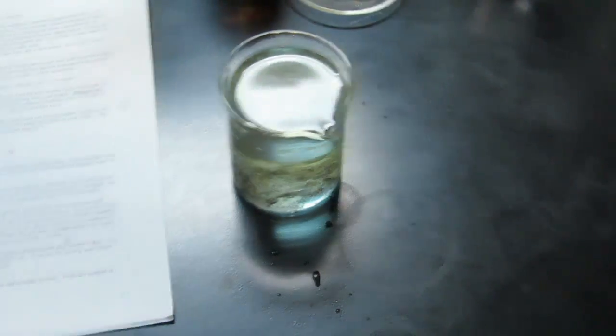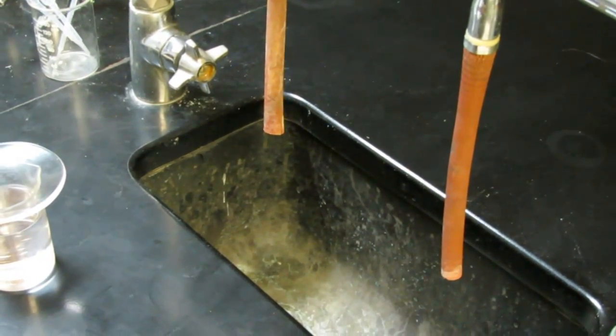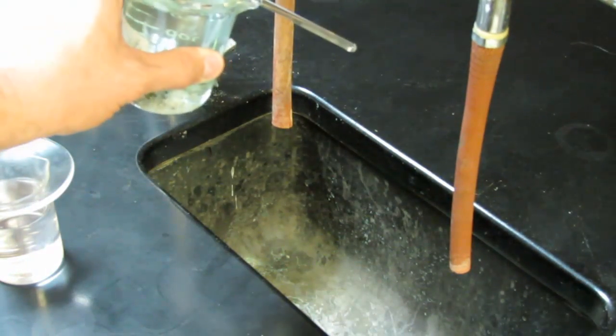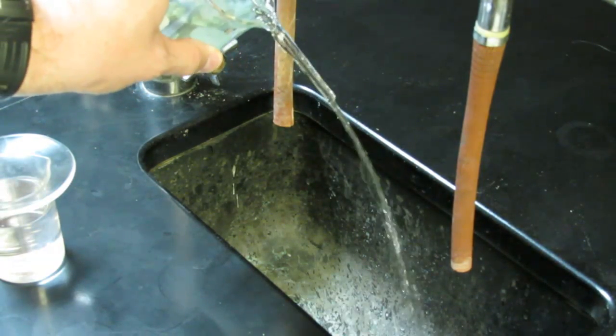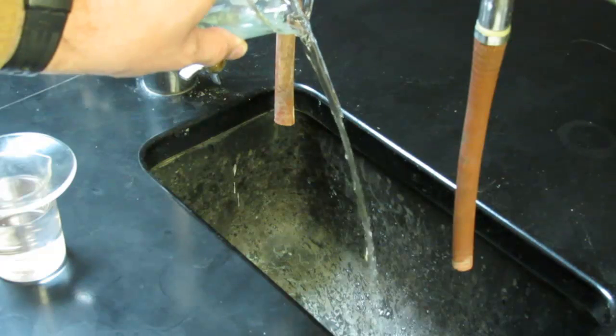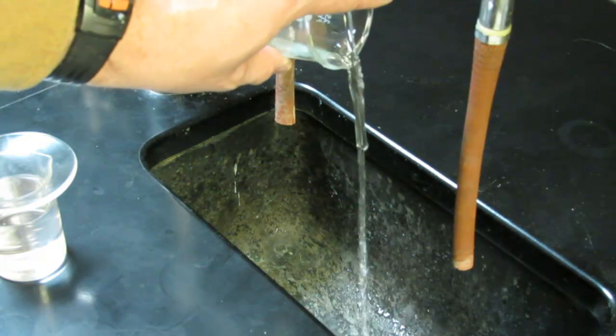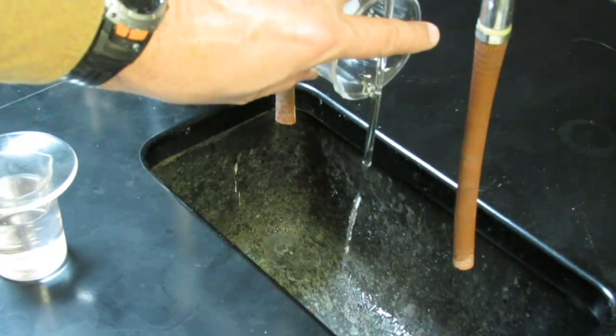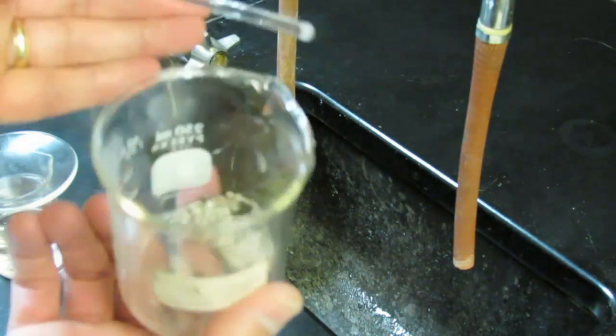To decant we'll do that into this sink over here. We're going to hold our stirring rod over top of our beaker like this. And when we pour the water out you'll notice that the water goes right down the stirring rod. Isn't that nice? We'll pour that water off. We're decanting it right into the sink. We're trying not to shake it too much because we don't want any of the silver to go down the sink. And you can see we have our silver there.